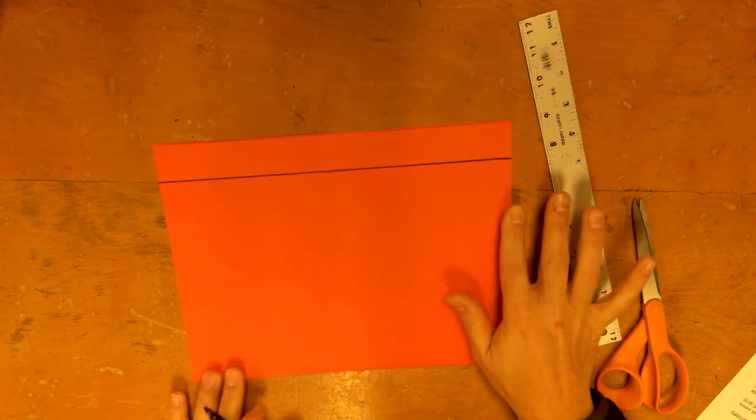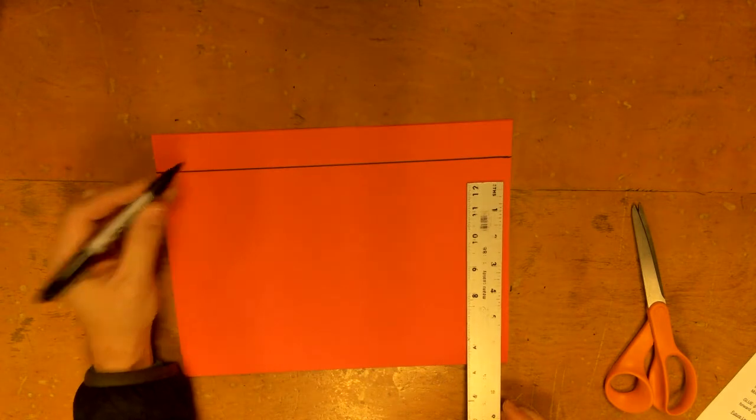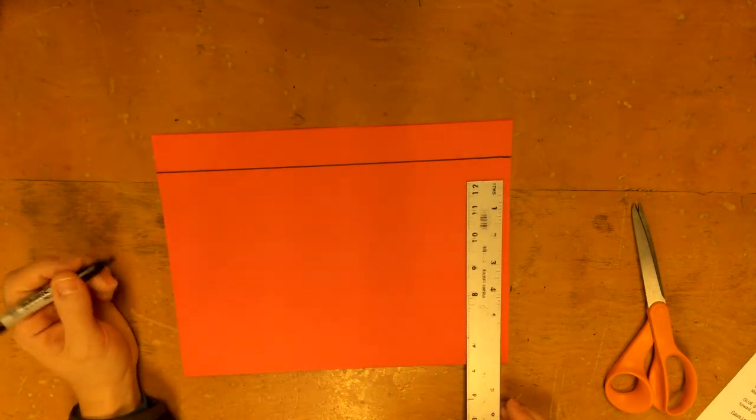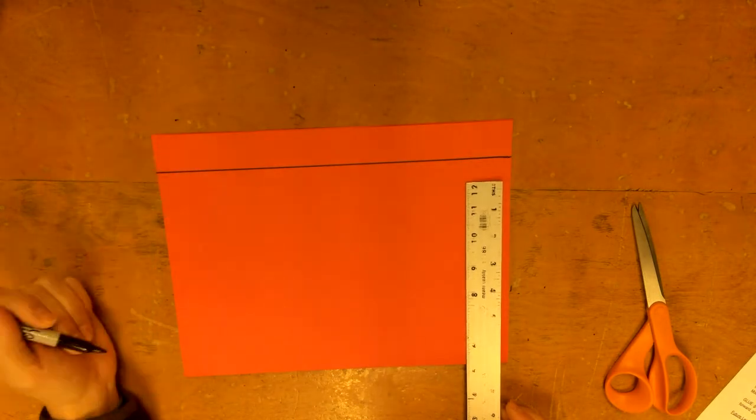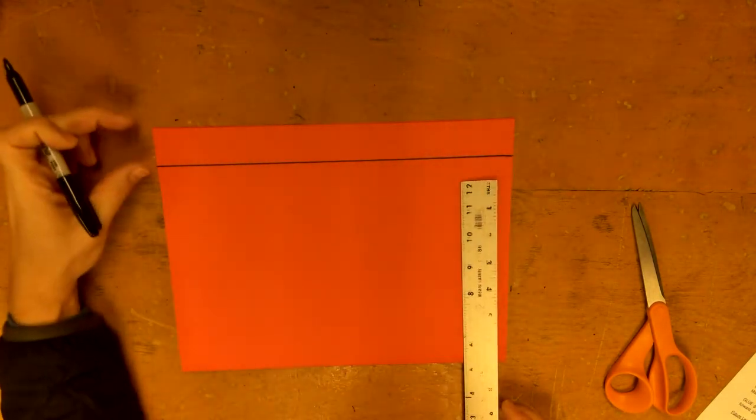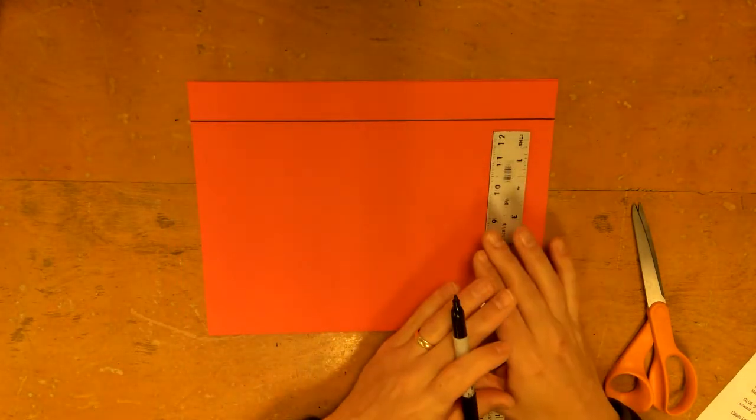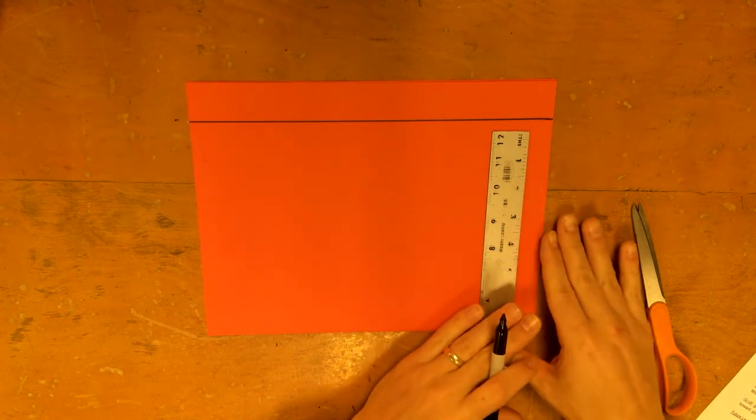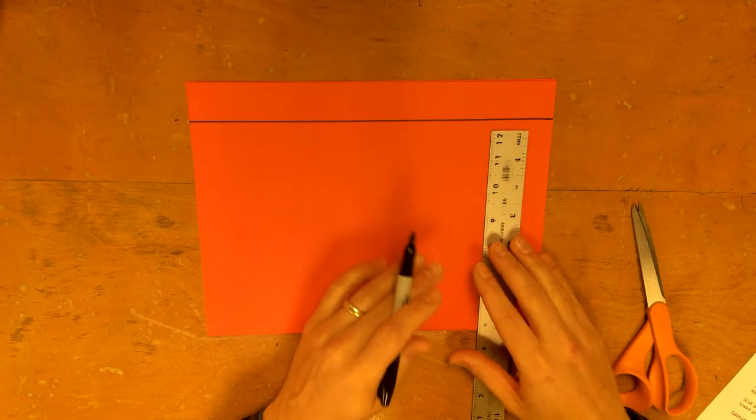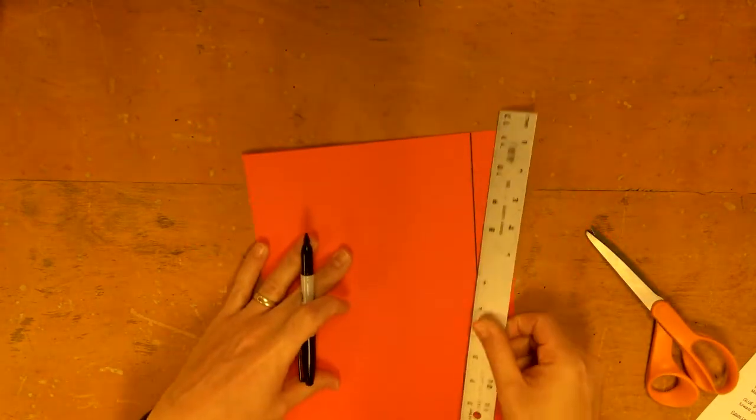Now what we do is we turn it so that that is up on the top. If you were at school I would make you write your name. Since you're probably the only person in your household doing this right now, I don't think you need to write your name. Just know that this line and this skinny section needs to be up on the top.